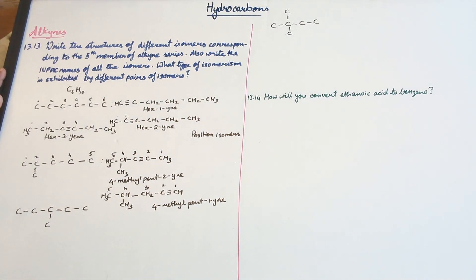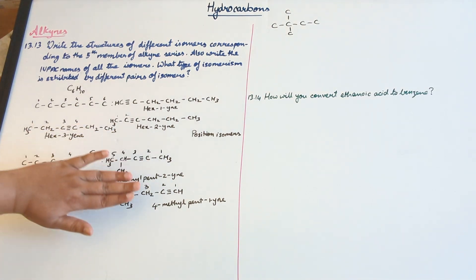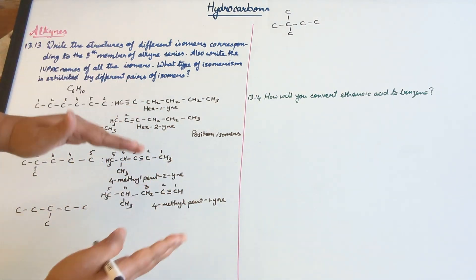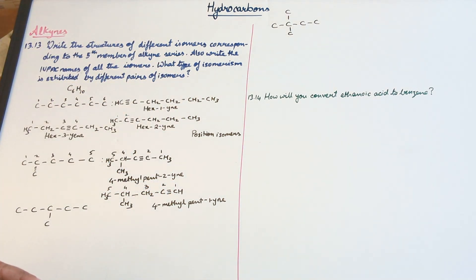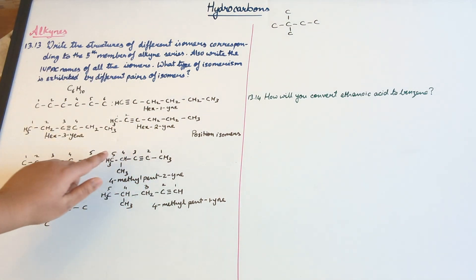Now again these two will be considered to be position isomers. But this set, these two isomers as well as these three isomers if you consider them as two sets, they are chain isomers. So you can take this and this or this and this. But anyway point is there is a difference in chain length, but they have the same molecular formula.